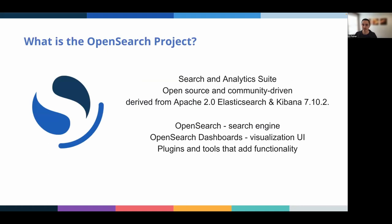So what is the OpenSearch project? The OpenSearch project is a search and analytics suite derived from Apache 2.0 Elasticsearch and Kibana 7.10.2. It's an open source and community driven project.